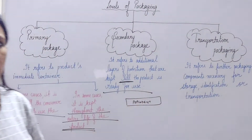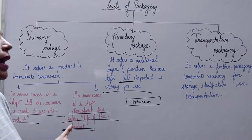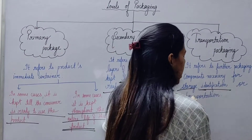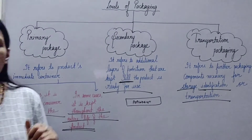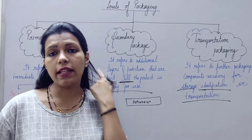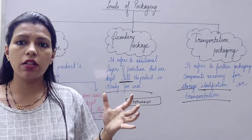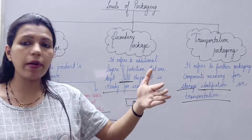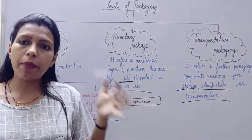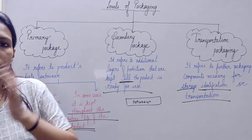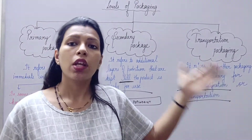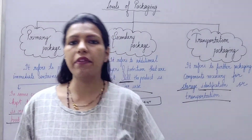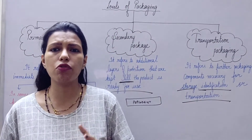Next is transportation packaging. It refers to further packaging components necessary for storage, identification, and transportation. For example, suppose a wholesaler has 500 or 1000 toothpaste units. They will use big corrugated carton boxes to pack all those units together. We call this transportation packaging. It is different from the individual product packages and is used to move goods from one place to another.